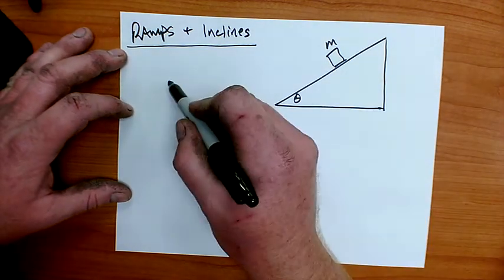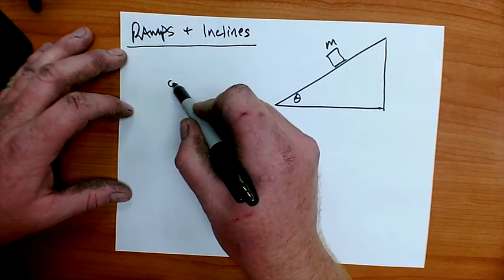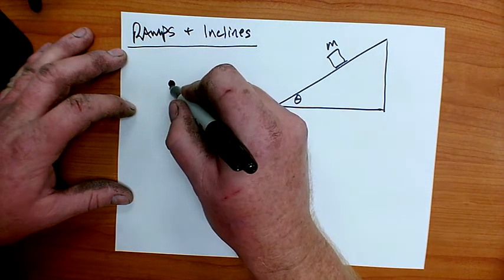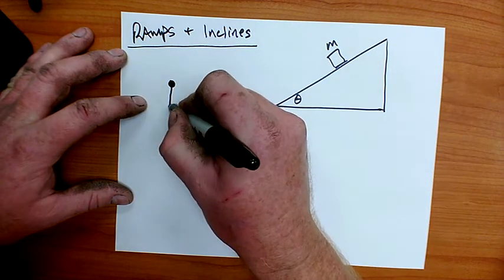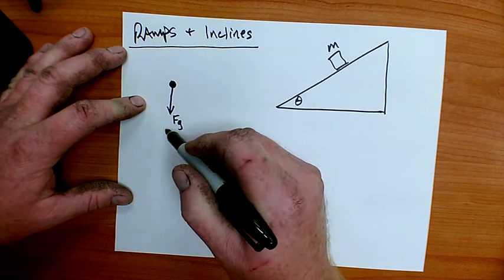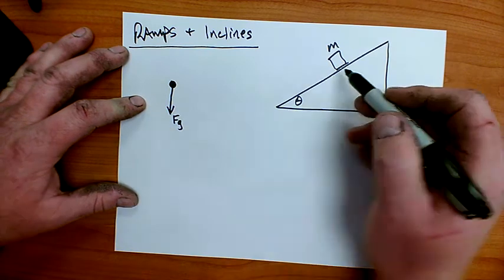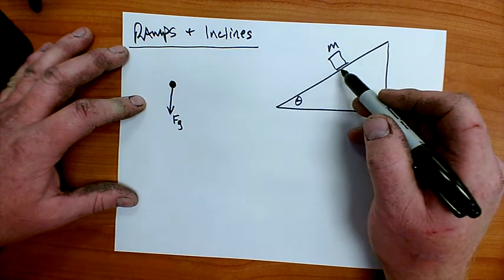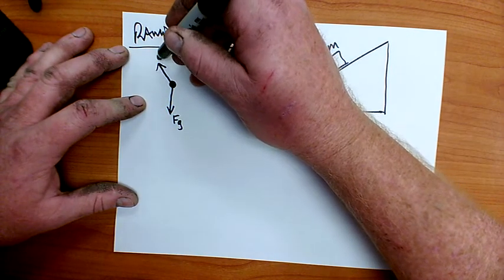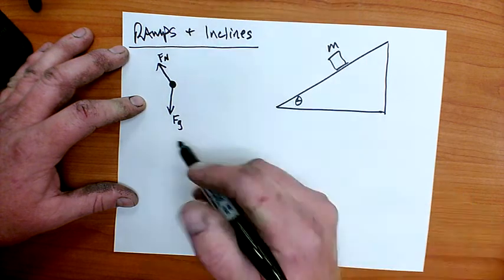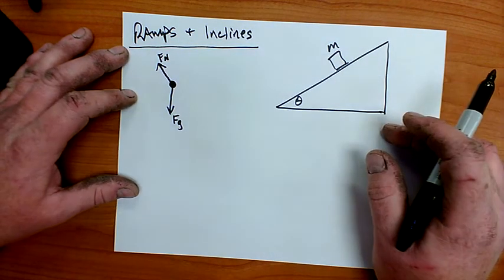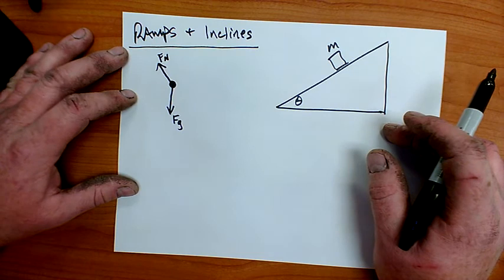We begin with a force diagram. Use a dot to represent my system — in this case, just my block. I start with the force of gravity, which is always towards the center of the earth, straight down. Since it's touching the surface, there's going to be a normal force perpendicular to the surface. There is no friction in this case, so that's it.